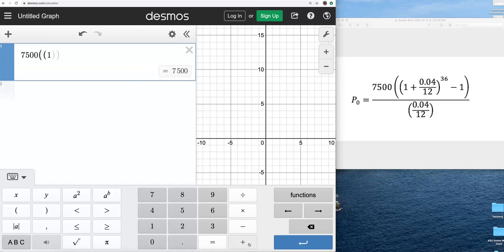That's 1 plus, now I have a fraction, so I'm going to type in the numerator, 0.04, and then I'm going to hit divide by 12. And notice Desmos just puts it in as a fraction for us. I can use my cursor, or my mouse, to click and close that parentheses.